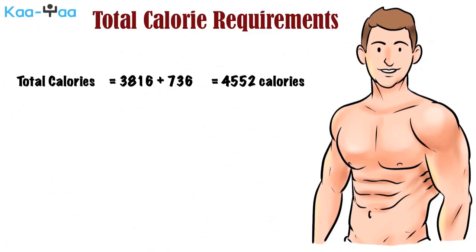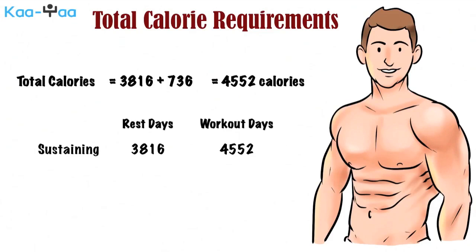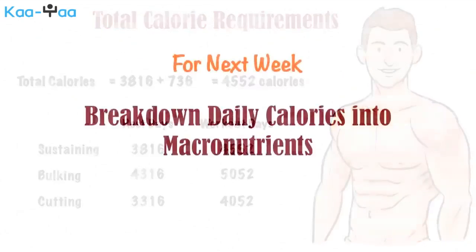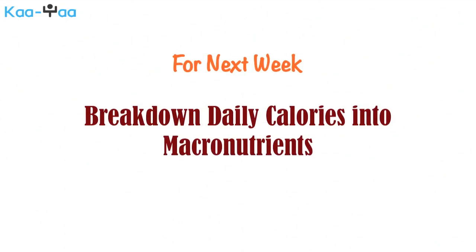To summarize, our 180-pound athlete with 10% body fat needs 3,816 calories on resting days and 4,552 calories on workout days to sustain his weight. If he wanted to increase muscle mass, he would need to add 500 more calories daily; if he is cutting, he would subtract 500 calories. That concludes our video on calorie calculation. For next week's video, we will break down these calories into macronutrients to guide you on what should be the source of your calories.